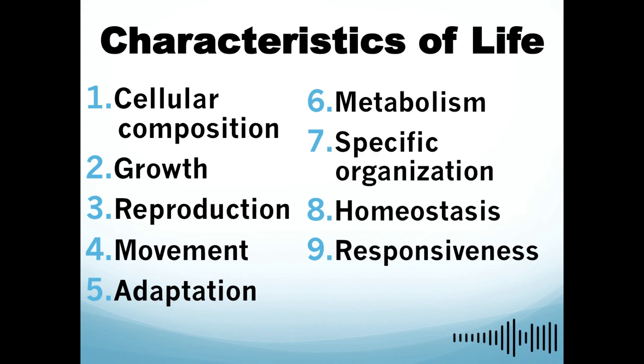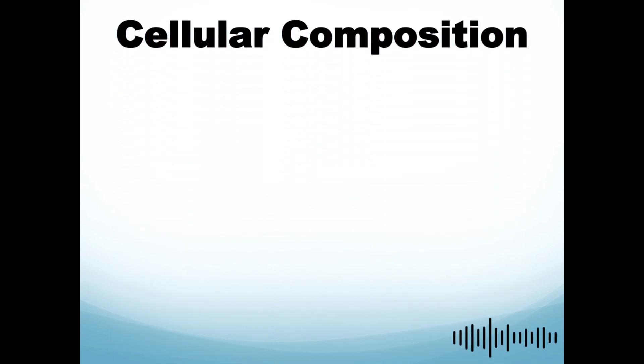Now let's start with cellular composition. The word itself, cellular, contains the word cell. If we define the word cell, it is defined as the basic unit of life. That means that all living things are comprised of cells. It could be at least one cell or it could be composed of more than one cell.